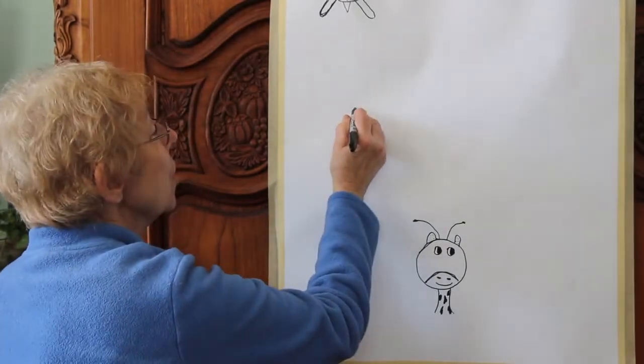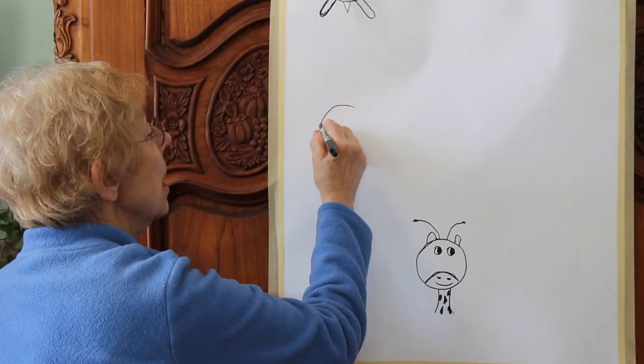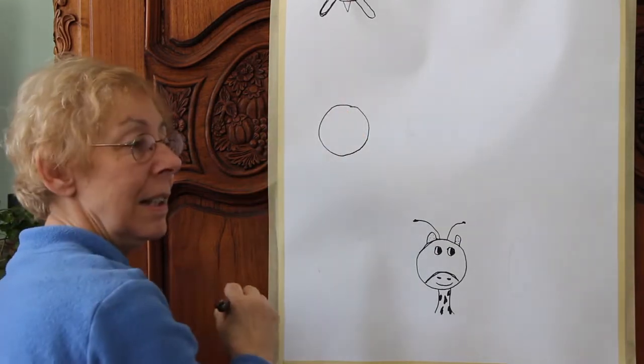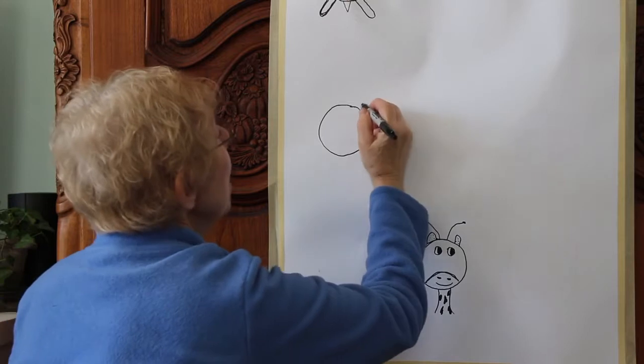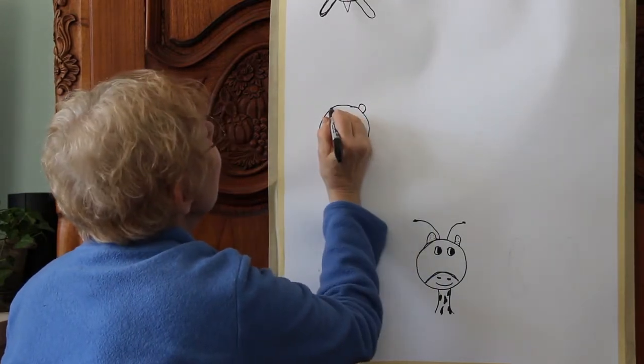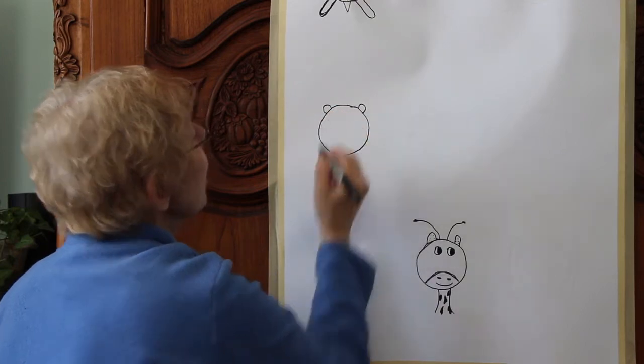Again, we're going to make a circle. The next thing we're going to do is we're going to put ears on this tiger. Alright.